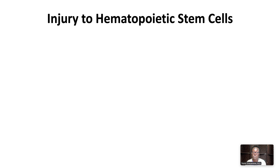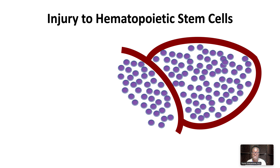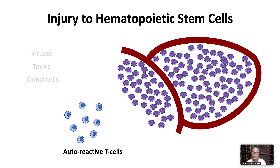Aplastic anemia occurs when there is injury to hematopoietic stem cells. Although this injury can be due to viruses, toxins, or clonal cells, the injury is largely driven by autoreactive T cells, which recognize and attack hematopoietic stem cells as foreign.